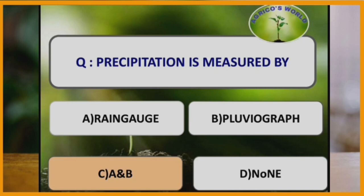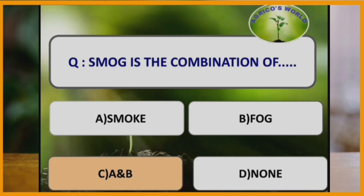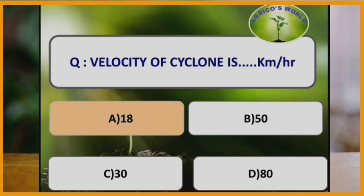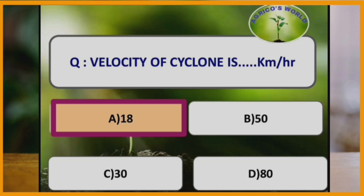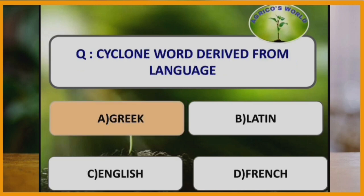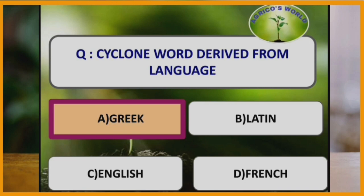Precipitation is measured by rain gauge and pluviograph. Smog is a combination of smoke and fog. Velocity of a cyclone is 18 kilometers per hour. The word cyclone is derived from the Greek language, meaning the coil of a snake.